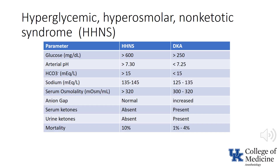A good question about HHNS or DKA would be to ask about specific lab values in the two conditions. One thing not listed in this table is that serum electrolytes tend to be normal in patients with hyperglycemic hyperosmolar non-ketotic syndrome. In the presence of DKA, patients will tend to have hyponatremia and hypophosphatemia, and magnesium will have a tendency to be low. In the presence of a lactic acidosis due to hypoperfusion, the values listed for pH, bicarb, and anion gap for HHNS may resemble those of DKA.